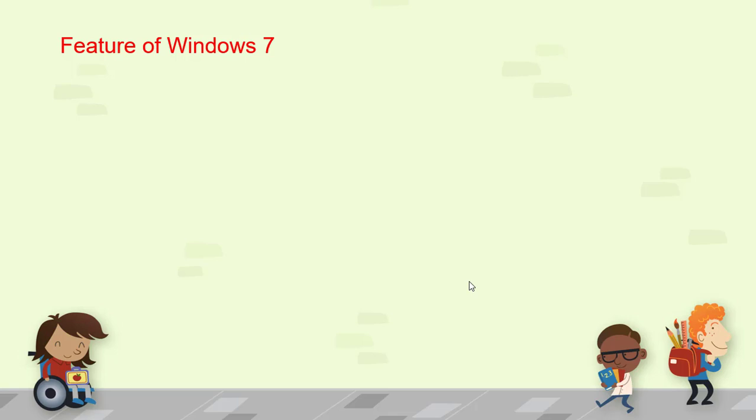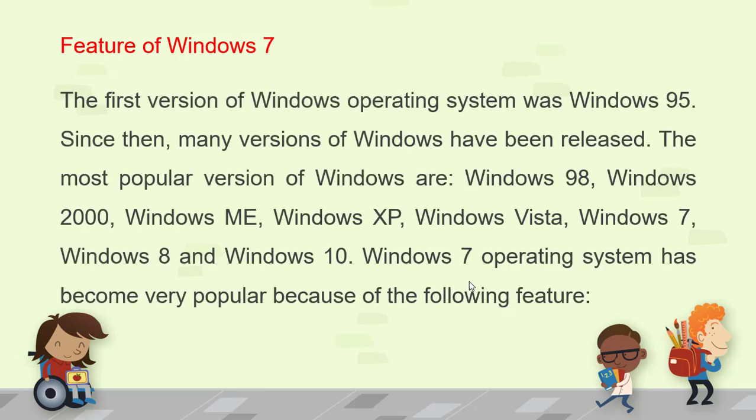Now it is time to discuss the features of Windows 7. The first version of the Windows operating system was Windows 95. Since then, many versions have been released. The most popular versions of Windows are: Windows 98, Windows 2000, Windows ME, Windows XP, Windows Vista, Windows 7, Windows 8, and Windows 10. Windows 10 is the latest version. Windows 7 has become very popular because of the following features.